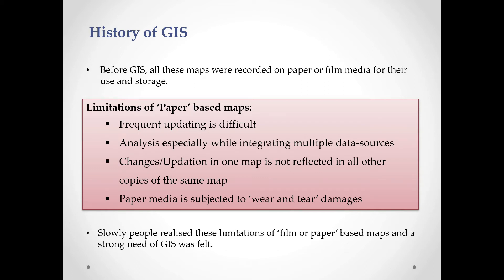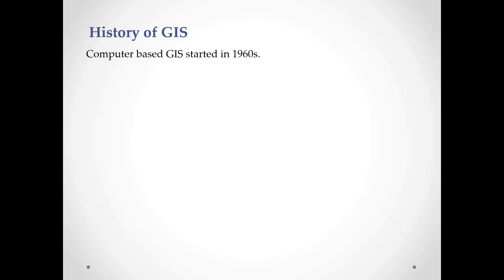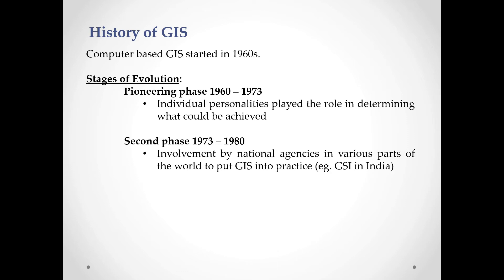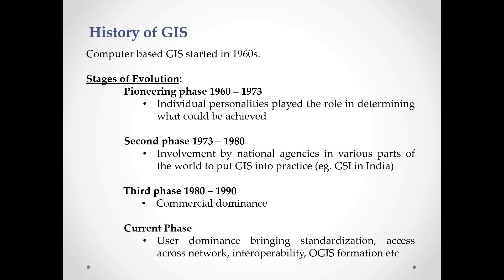These are the four limitations of paper-based maps. People realized these limitations and a strong need for GIS was felt. Computer-based GIS started in the 1960s. The first phase (1960–1973): individual personalities played the key role. The second phase (1973–1980): involvement by national agencies in various parts of the world to put GIS into practice, including GIS in India. The third phase saw commercial dominance.